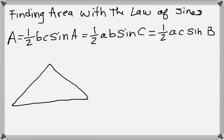Law of Sines for area - it's real simple. It's basically like one-half base times height. So you have one-half BC sine A, or one-half AB sine C,